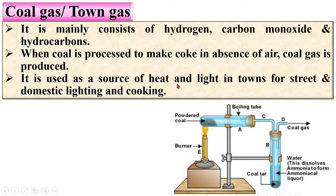Coal gas is used as a source of heat and light in towns, for street and domestic lighting and cooking. Here you can see the process for making coal gas: the input is powdered coal, and in the absence of air, coal gas is created.